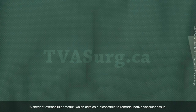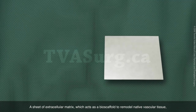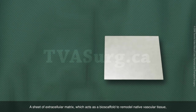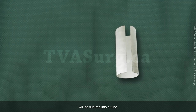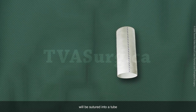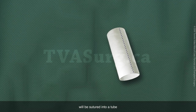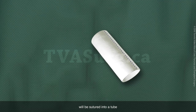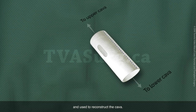A sheet of extracellular matrix, which acts as a bioscaffold to remodel native vascular tissue, will be sutured into a tube and used to reconstruct the cava.